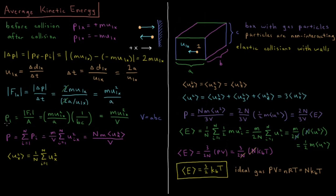To compute the pressure acting on the particle due to its collisions with this wall, we take force divided by area. The force is MU₁ₓ²/A, and the area of this wall is B times C. So pressure equals MU₁ₓ² over A times B times C. Since A×B×C is the total volume V of the box, this is MU₁ₓ²/V for particle 1.